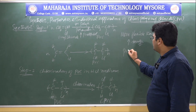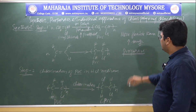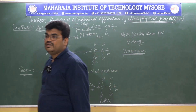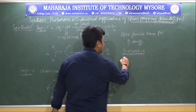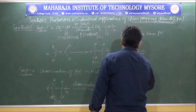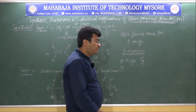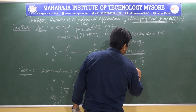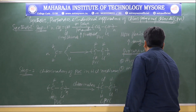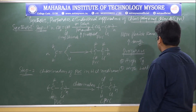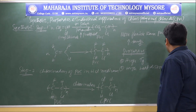Coming to the properties of CPVC: first, it has a high glass transition temperature (high Tg). Second, it has a high heat distortion temperature.